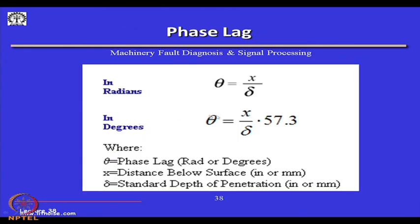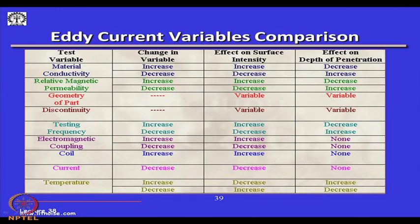There will be a certain phase lag between the surface and the depth of penetration. Certain variables can be compared: material conductivity, relative magnetic permeability, geometry, discontinuity, testing frequency, electromagnetic coupling, coil current, and temperature — and how changes in each affect the surface intensity and depth of penetration.